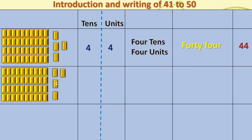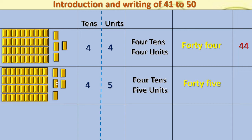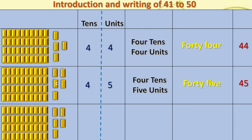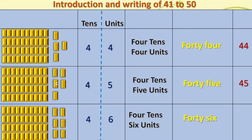Next, adding 1 more single, we got 4 tens and 5 units. The number formed is 45 — that is 40 and 5. Again, we are going to add 1 more single to 45. So, we get 4 tens and 6 units. The number is 46 — that is nothing but 40 and 6.